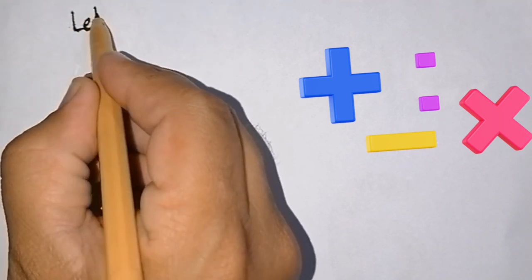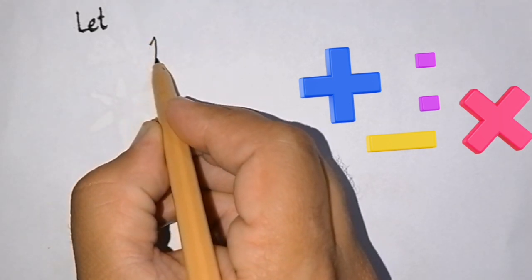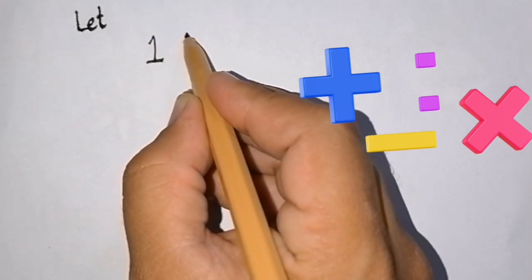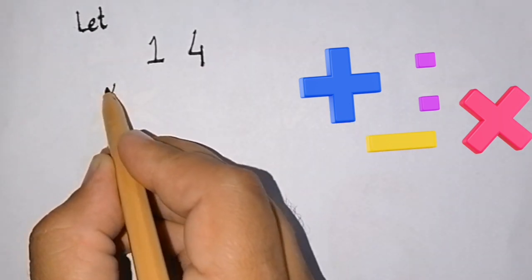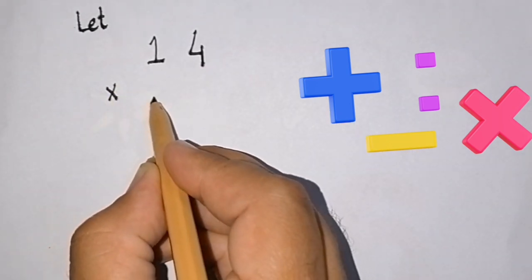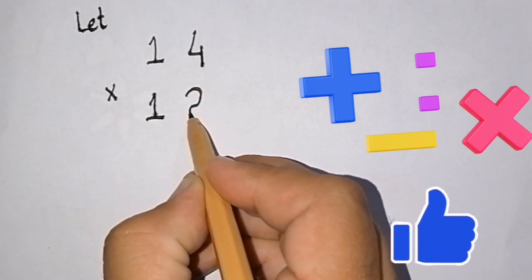Okay, let's start with sample digits from 10 to 20. We will take 14 multiply with 12.